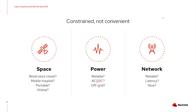Variability: in addition to varying hardware, there are other environmental variables at the edge not usually found in standard data centers. Space: how much room is there — is it in a small closet, does it need to fit in a vehicle, be carried, or even run on a satellite? Power: is power guaranteed or unreliable, AC or DC, remote, off-grid? Network: how reliable is the connectivity at edge sites, what's the latency, and how fast is it? All of these factors need to be considered and can vary from site to site.